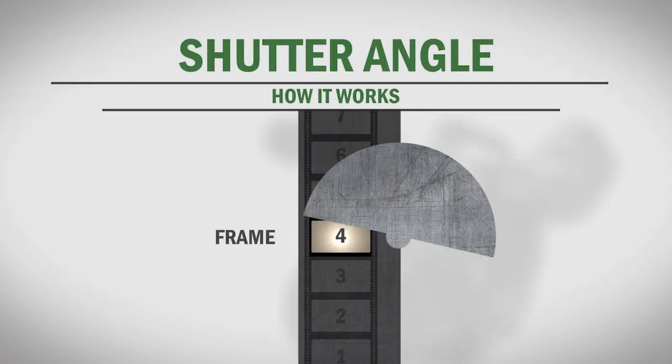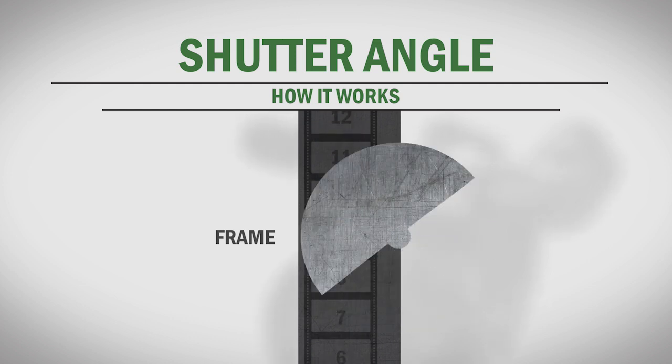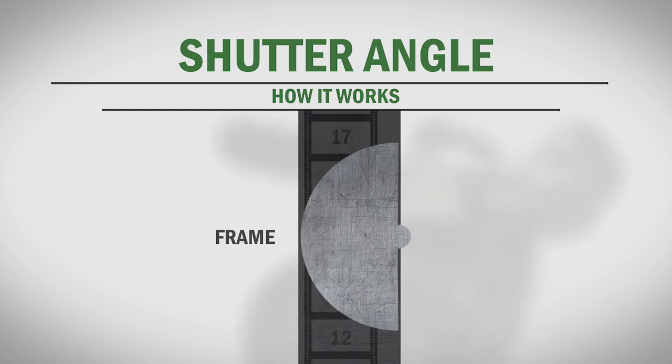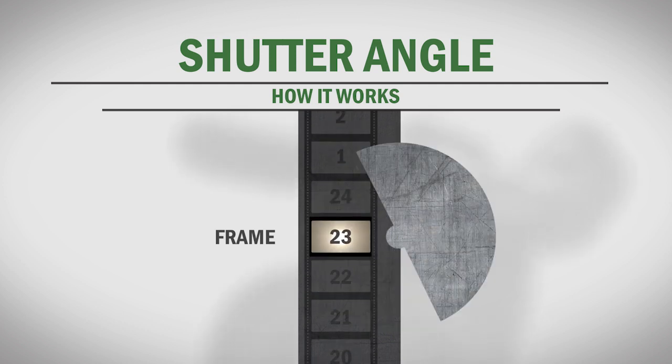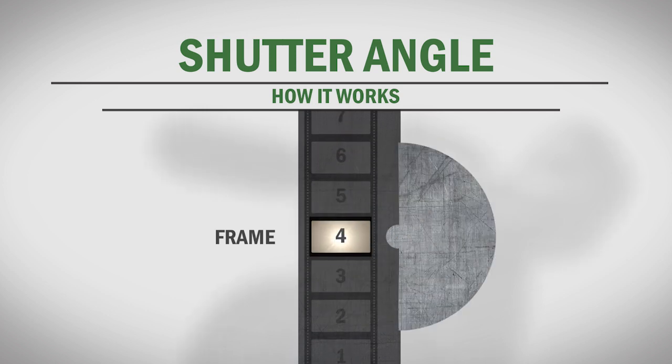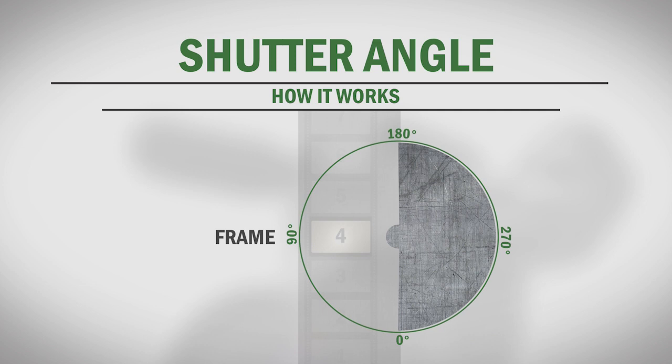The term shutter angle comes from the way a traditional film camera works. Each frame of film is exposed to light, and then the camera advances the film to the next frame. In film, this typically happens 24 times per second. But while the camera moves the film from one frame to the next, the frame must be blocked from exposure to light. A physical shutter allows each frame to be held still while it's exposed to light, then blocks the light while the film advances to the next frame. The shutter angle refers to the portion of the circular disk that allows light to pass through to expose each individual frame.